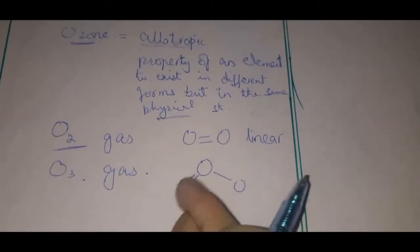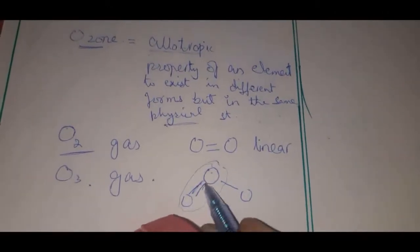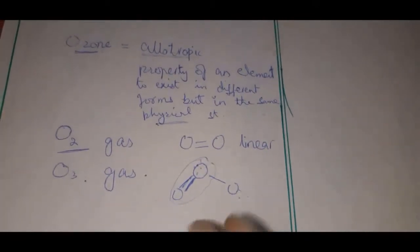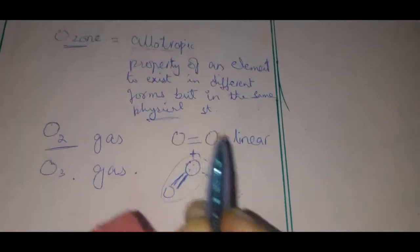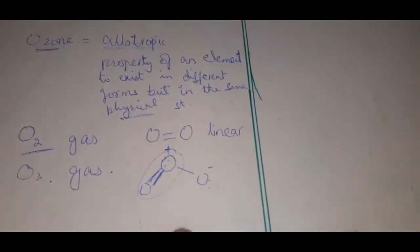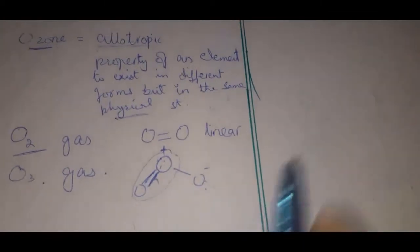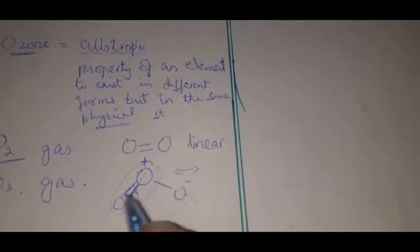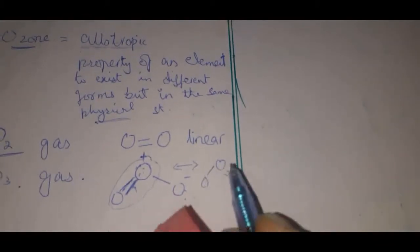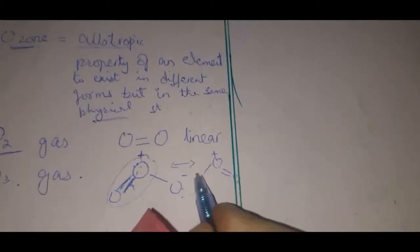Ozone gas has three oxygen atoms and it is not linear — it has a bent shape. Because of the double bond, there is more attraction between two of the oxygen atoms, so a positive charge appears on one side and a negative charge on the other. Some studies also show a resonating structure where the double bond can be on either side: O double bond O single bond O, or O single bond O double bond O.